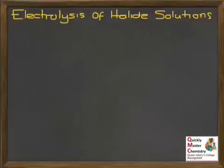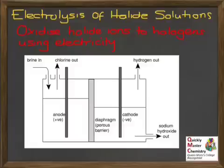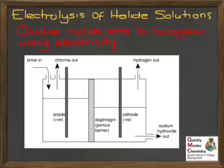Turning from reacting halide ions with halogens to a different way of oxidising halide ions: electrolysis. In electrolysis, electricity is used to pull electrons off the halide ions and oxidise them in order to get halogen elements. This is done on a huge scale with sodium chloride solution, known as brine. Chlorine gas is produced at the positive electrode, hydrogen gas at the negative electrode, and sodium hydroxide is produced as well — all three being very useful products of this important industrial process.